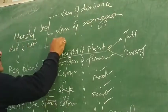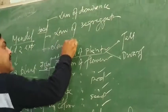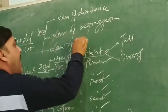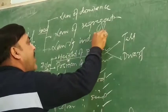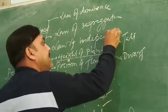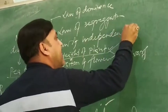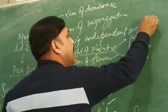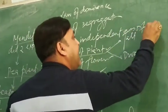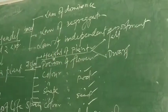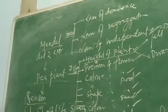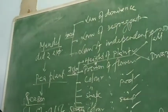Segregation. And the third one is the Law of Independent Assortment. Now, let me explain this law.